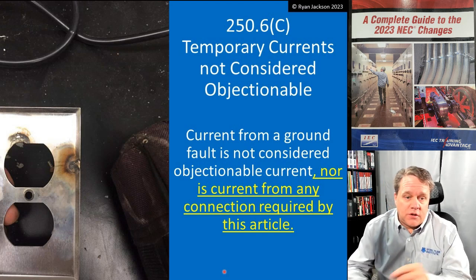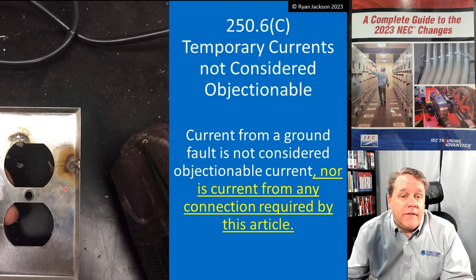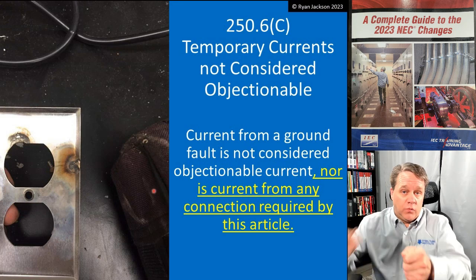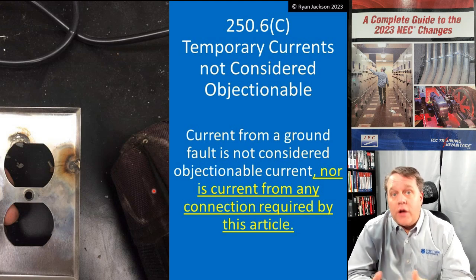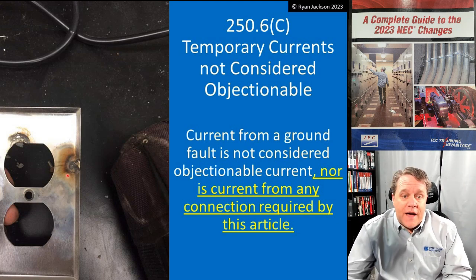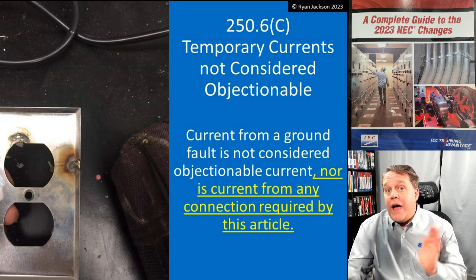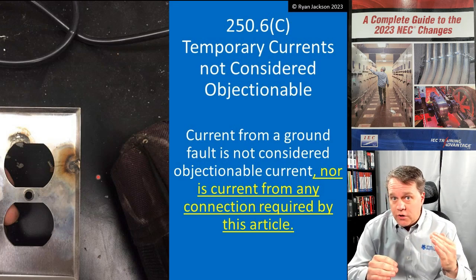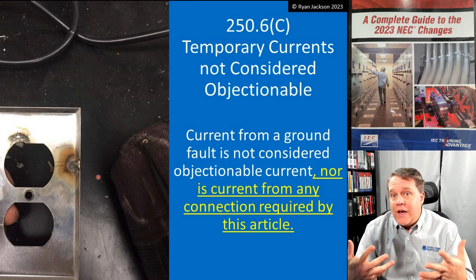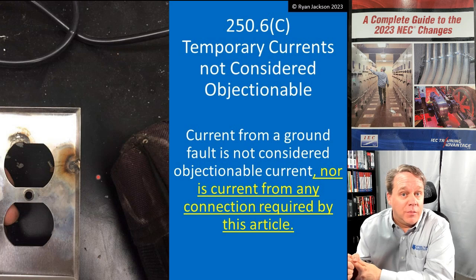Current from a ground fault is not considered objectionable. Here we energized a metal faceplate with a hot conductor, and the arcing and welding on it is actually evidence of a code-compliant installation. During that ground fault, hundreds or maybe thousands of amps of current flowed on the equipment grounding conductor and opened the circuit breaker. That arc is proof we had a low-impedance fault current path to trip the breaker and remove dangerous voltage. That type of current is the equipment grounding conductor doing exactly what it's supposed to do.